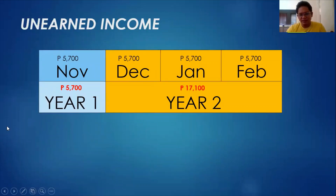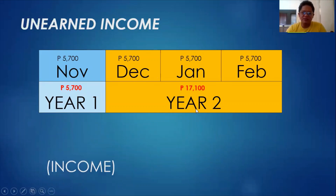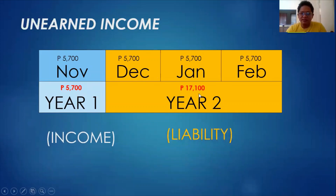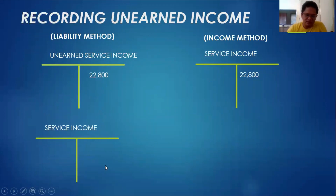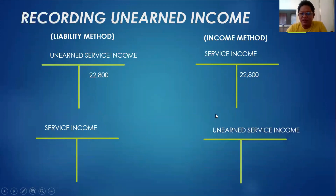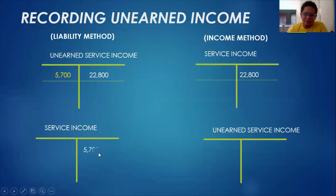So 5,700 is earned — one month — and three months are not yet earned. So 5,700 earned, 17,100 unearned. We can recognize 5,700 as income and 17,100 as a liability we owe to our customers. To recognize the adjusting entries: under the liability method, we set up the income portion — the 5,700; and under the income method, we take out the unearned portion and set up the liability.